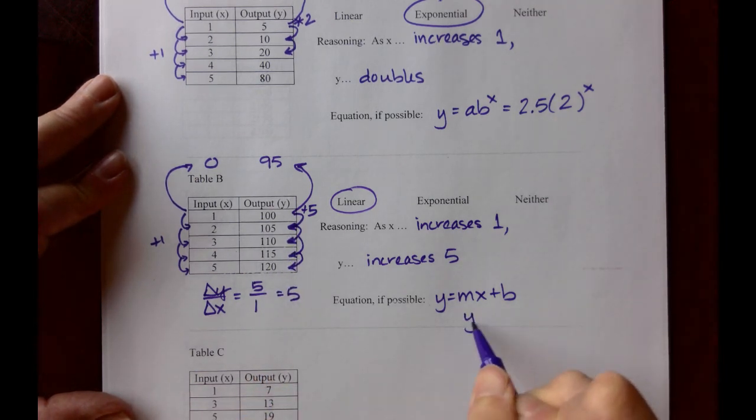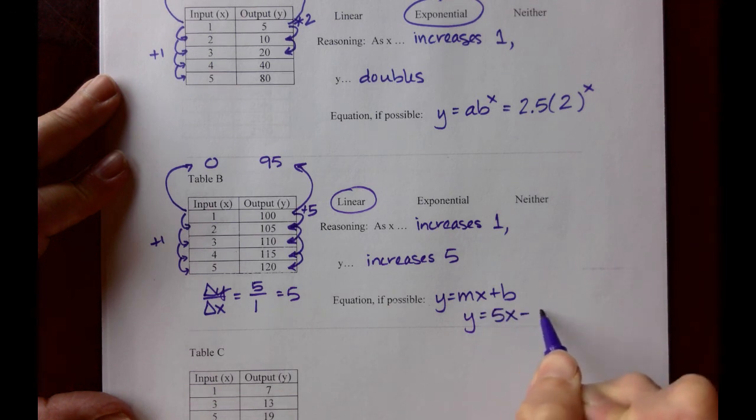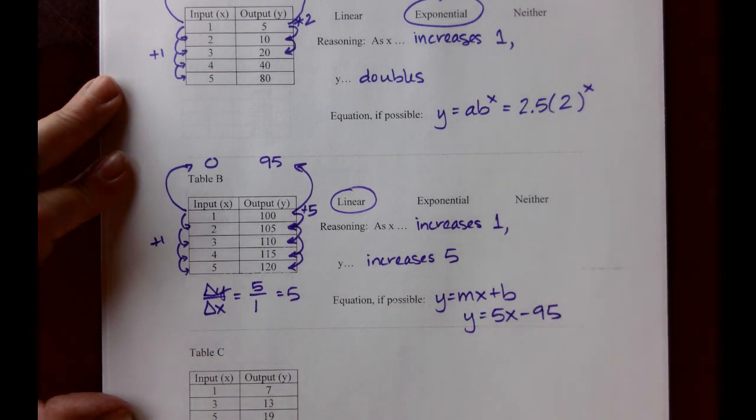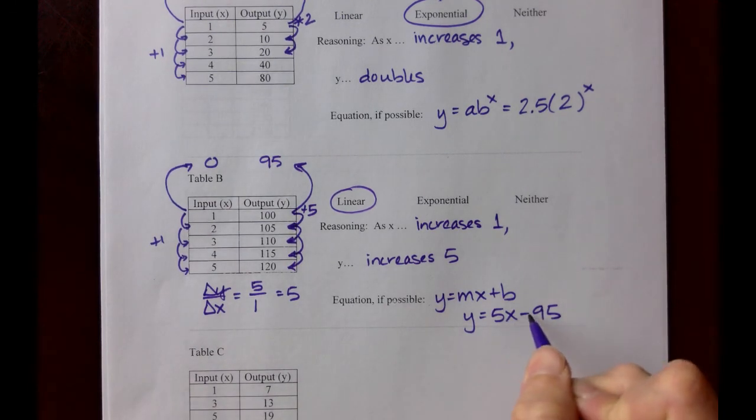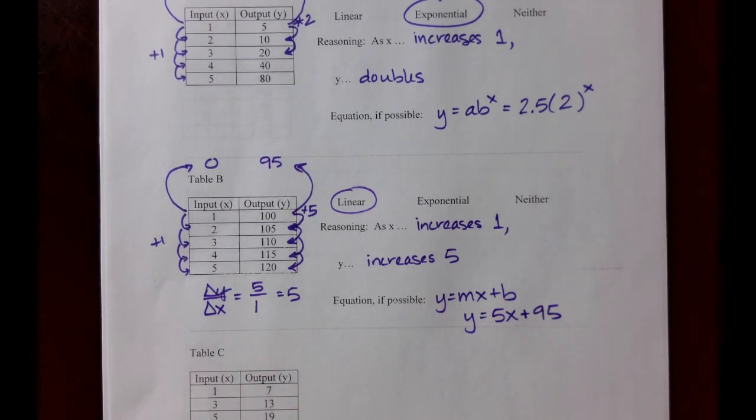Your equation, y equals 5x minus 95. And remember, you can check these equations by plugging in each of your ordered pairs and making sure that they work. And mine is not working. Oh, right, because it should be 5x plus 95. There we go. So you should check your stuff. You never know when you might lose a negative or positive sign.